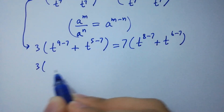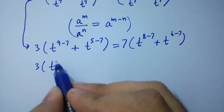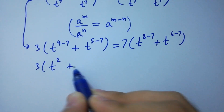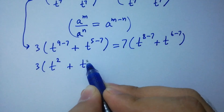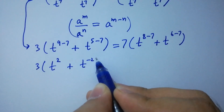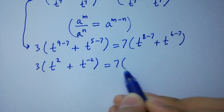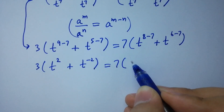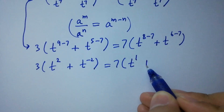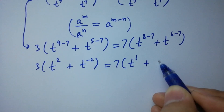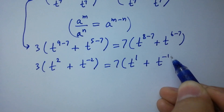3 times t to the power 9 minus 7, which gives 2, plus t to the power 5 minus 7, which gives minus 2, equal to 7 times t to the power 8 minus 7, which gives 1, plus t to the power 6 minus 7, which gives minus 1.